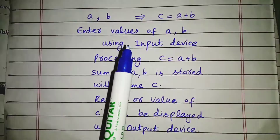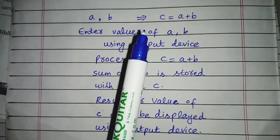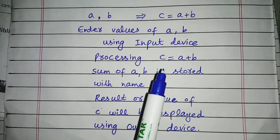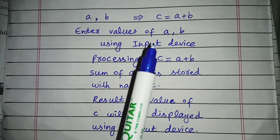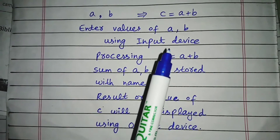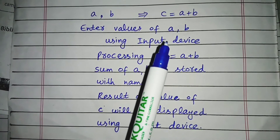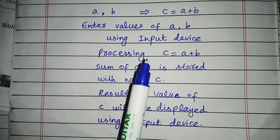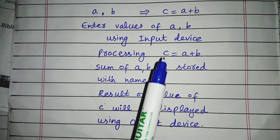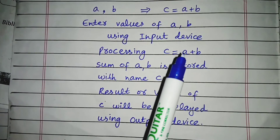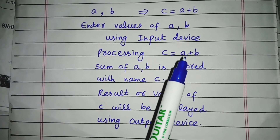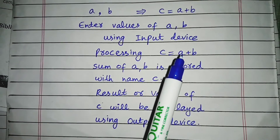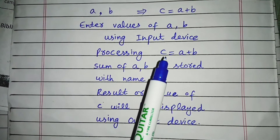For example, two data values are given and we have to calculate their sum. The first step is to enter the two data values using some input device. The first data value will be stored with name A, and the second with name B. Next, in the processing step, C = A + B — we access the values using their names. The sum is then stored in computer memory with the new name C.